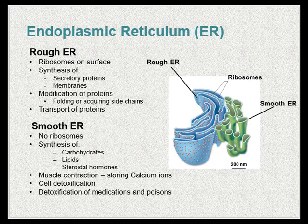The smooth ER is continuous with the rough ER but typically has no ribosomes on its cytoplasmic surface. Functions of the smooth ER include synthesis of carbohydrates, lipids, and steroid hormones, as well as detoxification of medicines and poisons. Muscle cells have specialized smooth endoplasmic reticula called sarcoplasmic reticula, responsible for storing calcium ions needed to trigger the muscle cells' coordinated contractions.